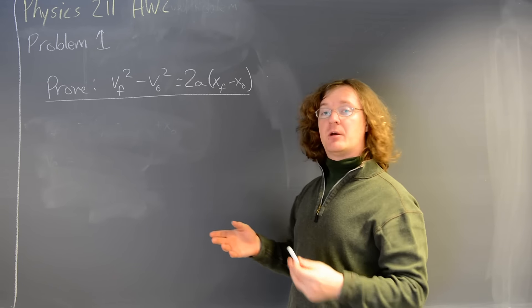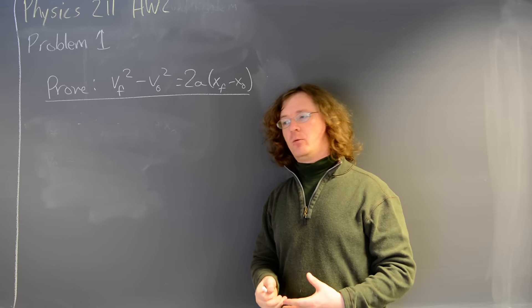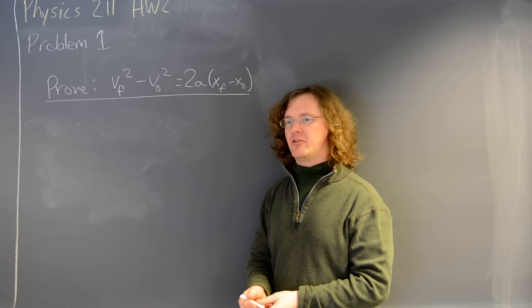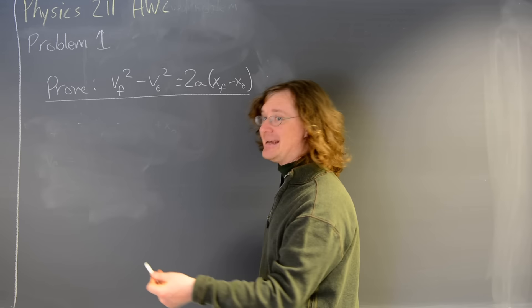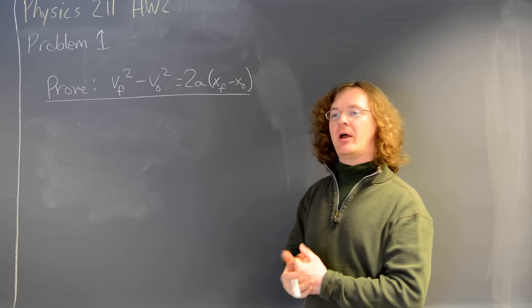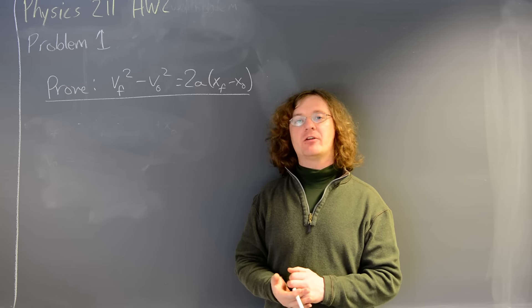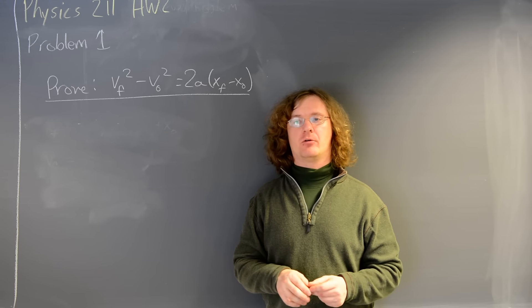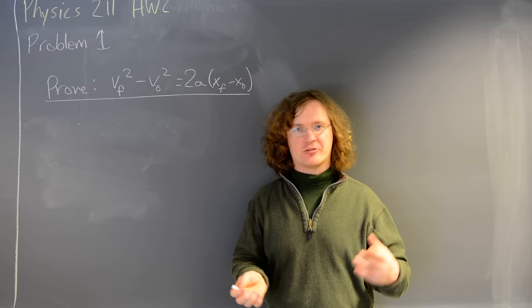We need to figure out how we can combine the two relations we know, which tell you position and velocity as a function of time, to eliminate t. This is sometimes called the third kinematics relation, the timeless relation. Sometimes it will make your life easier. You're never going to need it for the things that we're going to do on the first exam.